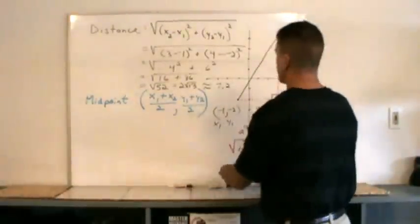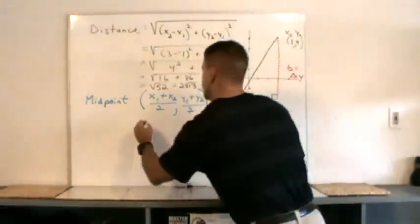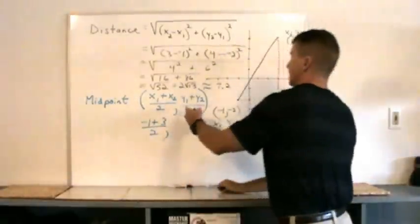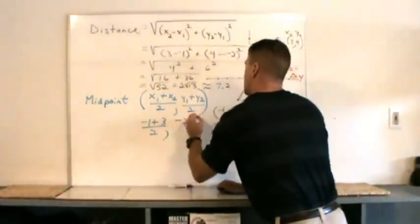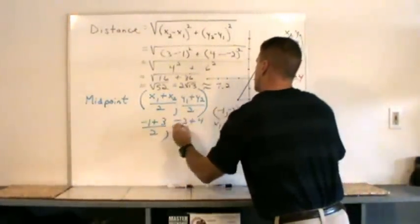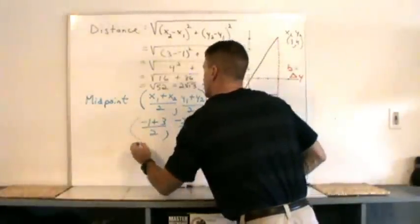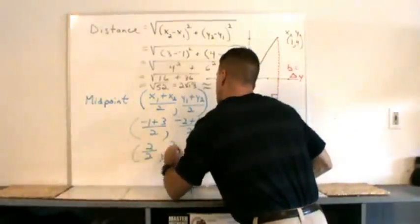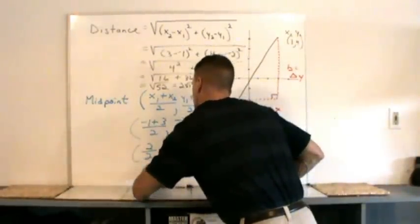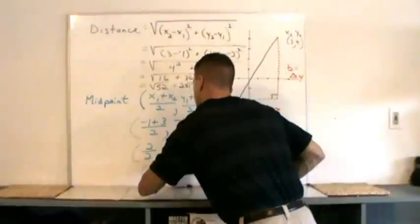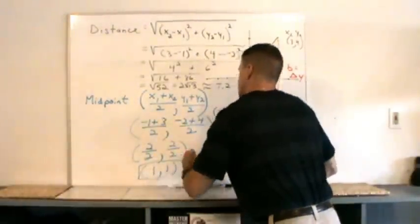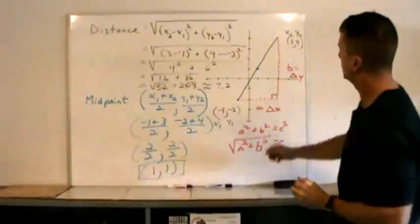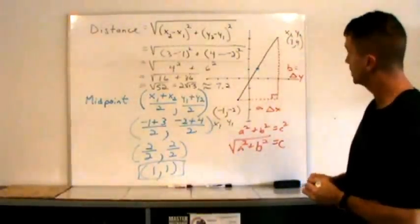Let's find that. Negative one plus three — adding the two x values — divided by two. Negative two plus four, divided by two. That gives us two over two, two over two, which is the coordinate one comma one. That's the midpoint. Let's check our work — there's one comma one, and yes, that does seem to be the midpoint.